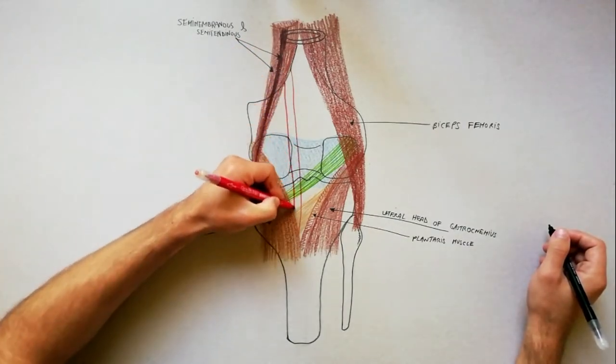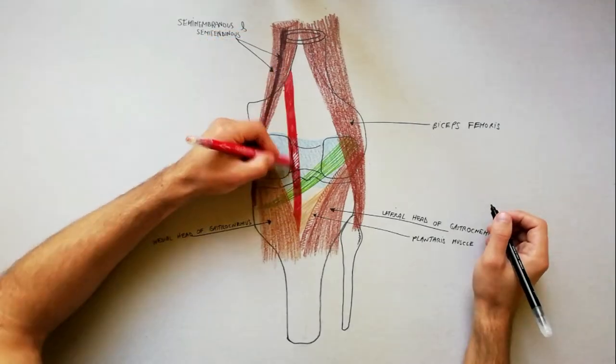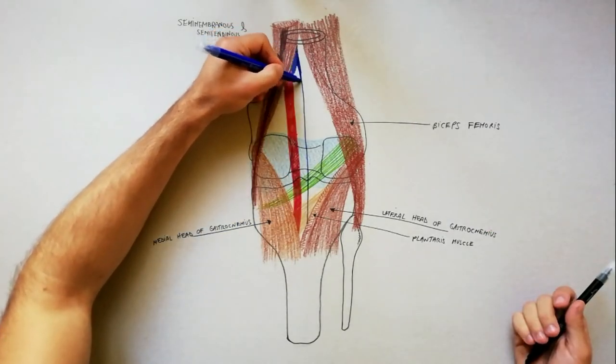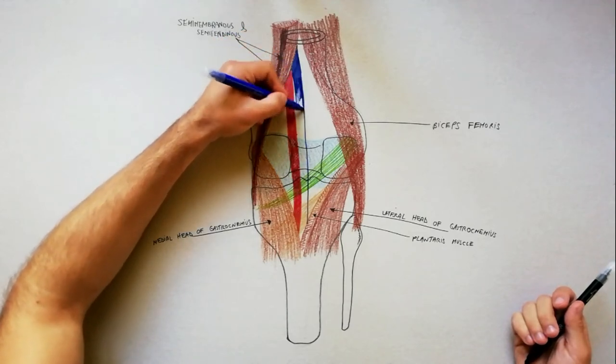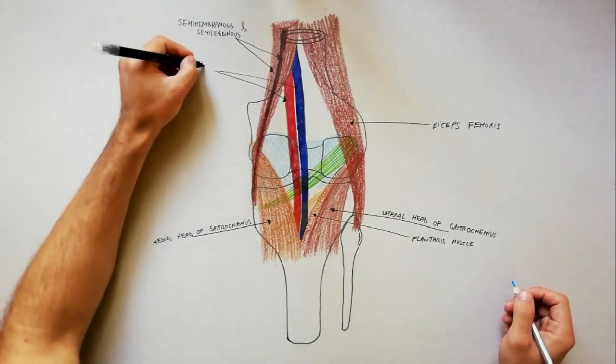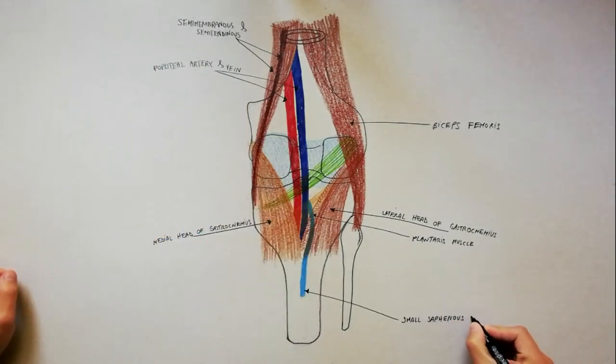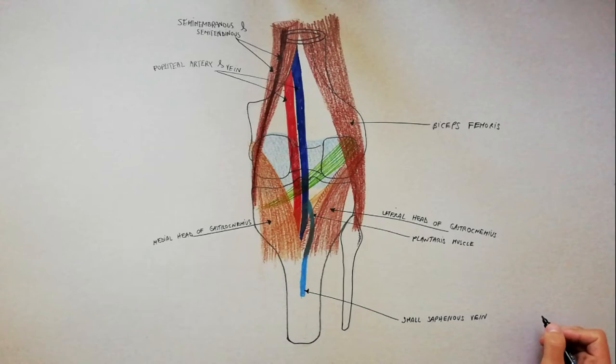The deepest structure and most medial is the popliteal artery. Lateral and slightly superficial to the artery is the popliteal vein, which in its inferior part receives the small saphenous vein. At the superior angle of the popliteal fossa, the sciatic nerve splits into tibial and common peroneal nerves.